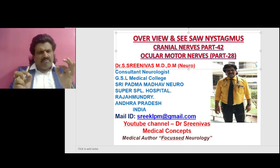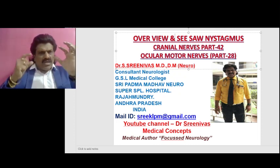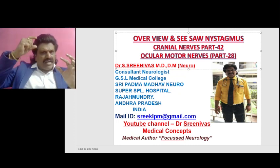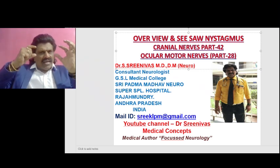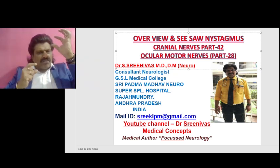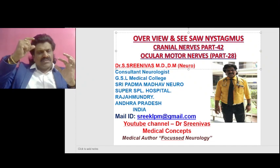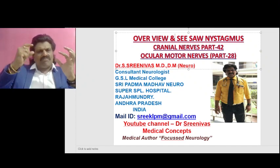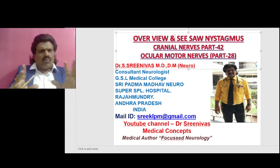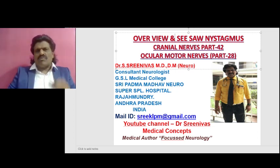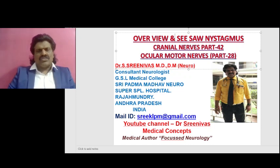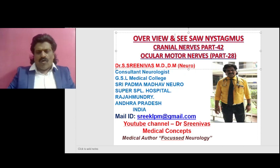Particularly, we will discuss seesaw nystagmus — wherein one eye moves up and the other eye moves down, and then this eye moves up and the other eye moves down. This is known as seesaw nystagmus — very interesting and fascinating, but very challenging to understand. With a simplified diagram, we can understand the mechanism of seesaw nystagmus. Now, over to the overview of nystagmus.